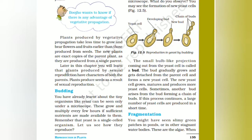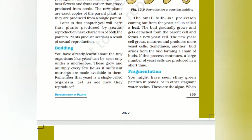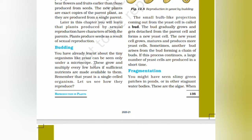Later in this chapter you will learn that plants produced by sexual reproduction have characteristics of both parents, as seeds are produced as a result of sexual reproduction. Budding: you have already learned about tiny organisms like yeast, which can be seen only under a microscope. They grow and multiply rapidly every few hours if sufficient nutrients are available. Remember that yeast is a single-celled organism.